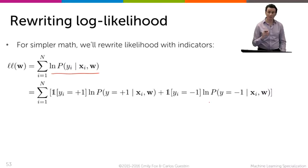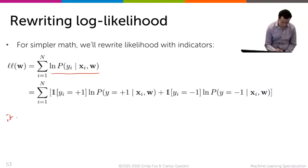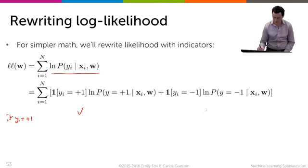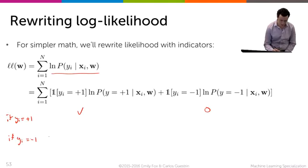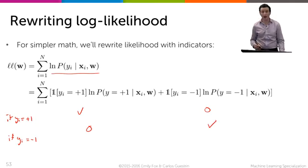So in other words, if y_i is plus one, then the first term comes into play and the second term becomes zero. But if y_i is equal to minus one, then the first term becomes zero and the second term becomes active.